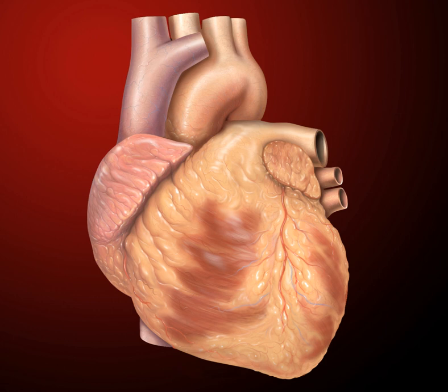The heart functions as a pump in the circulatory system to provide a continuous flow of blood throughout the body. This circulation consists of the systemic circulation to and from the body and the pulmonary circulation to and from the lungs. Blood in the pulmonary circulation exchanges carbon dioxide for oxygen in the lungs. The right heart collects deoxygenated blood from the superior and inferior venae cavae. The superior vena cava drains blood from above the diaphragm and the inferior vena cava drains blood from below the diaphragm, both emptying into the right atrium.